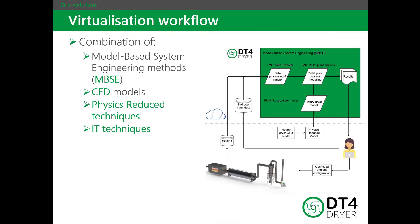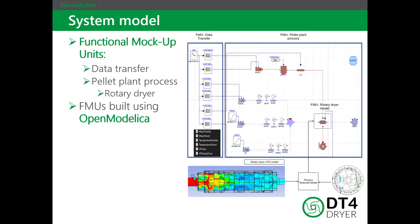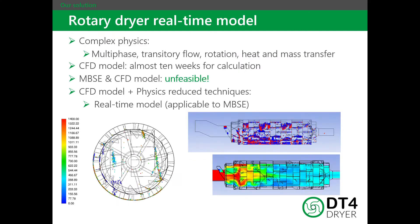As shown in the diagram, the workflow of the virtualization of the process is composed of several pieces assembled in a cloud environment. The model of the process has been implemented by the definition of two main FMUs, each of them consisting of a number of modules interconnected. Some of these modules are relatively simple, such as valves or sensors, while others are fairly complex, in particular the rotary dryer.